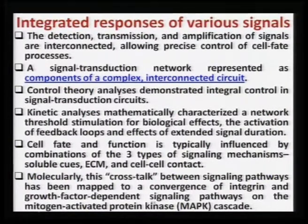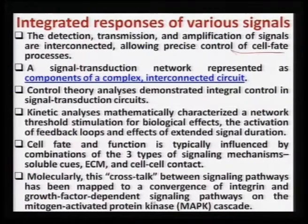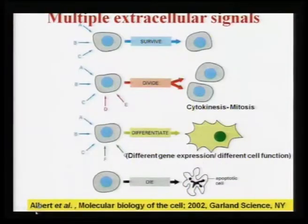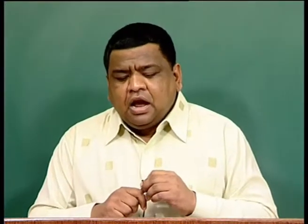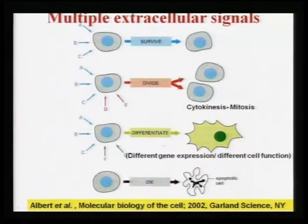Coming to the integrated response of various signals. Detection, transmission, and amplification of signals are interconnected and allow precise control of cell fate processes. Integrated response means: for any type of process — whether the cell wants to survive, divide, differentiate, or die — for all these cell fate processes which are part of tissue homeostasis, each function requires not one signal but multiple signals.